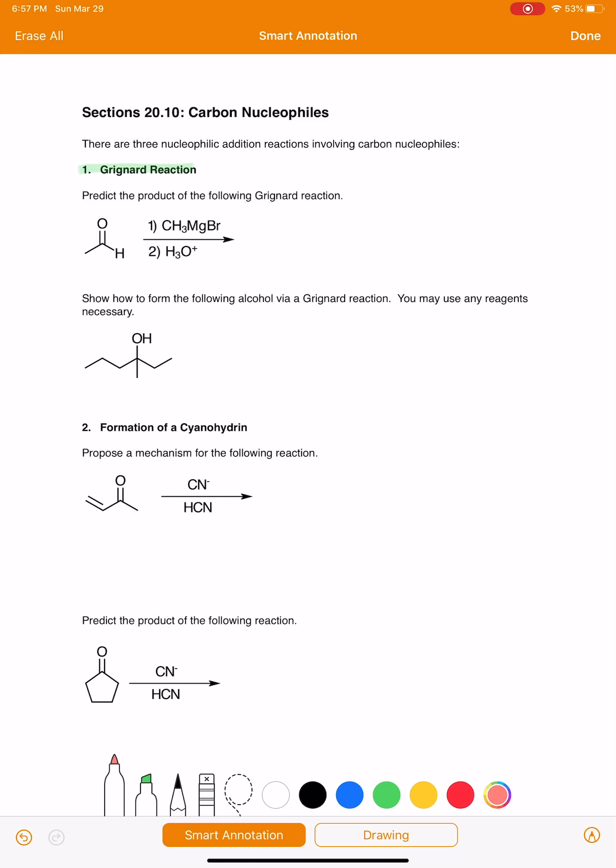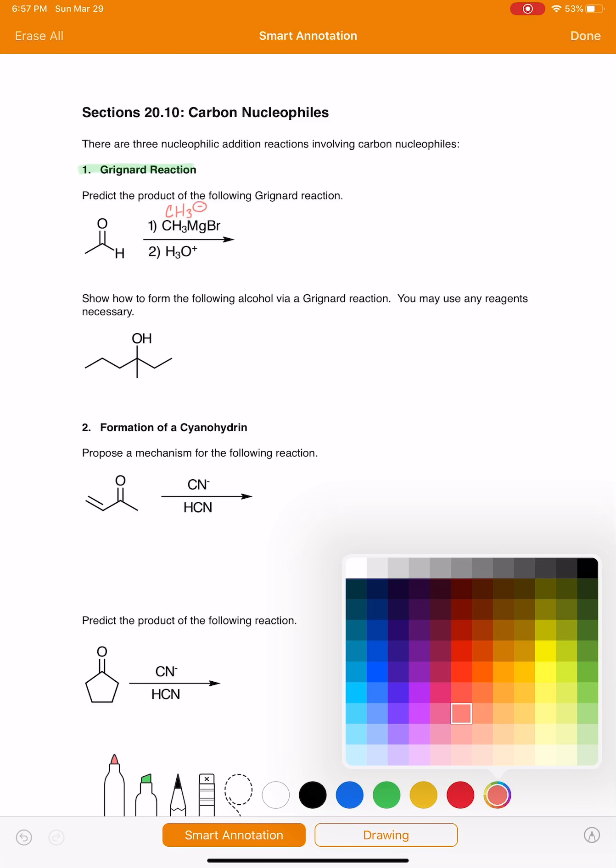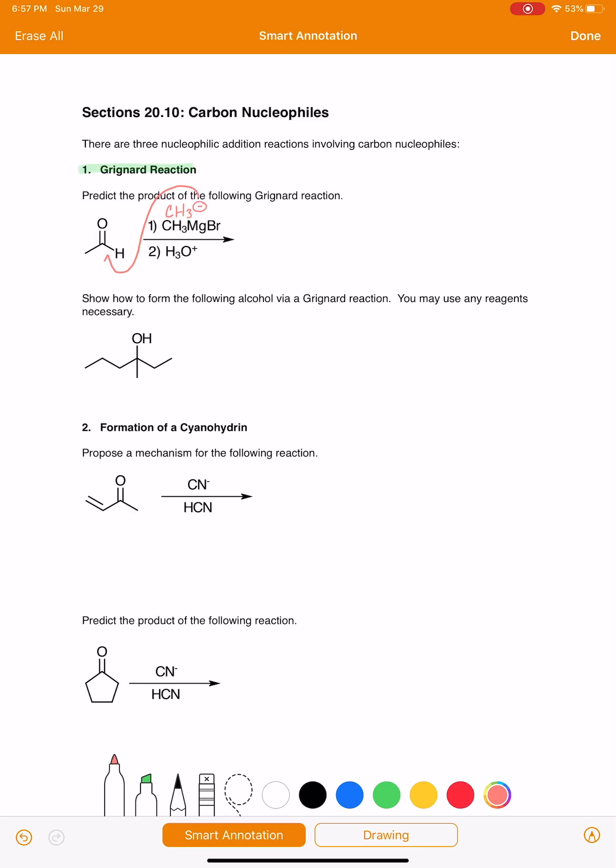The Grignard reagent acts like an R-. In this case, our R group is CH3. So this acts like a CH3-. And that R group attacks the carbonyl carbon and opens up the carbon-oxygen double bond. And we get, in the first step, negative charge on the oxygen because we've moved the electrons up onto the oxygen, and we have formed a new bond with the alkyl group from the Grignard.